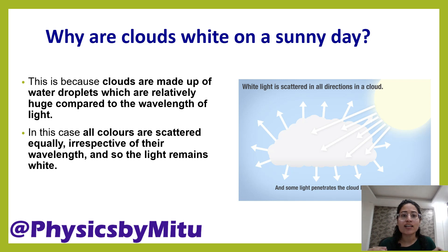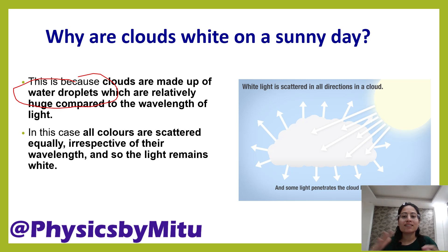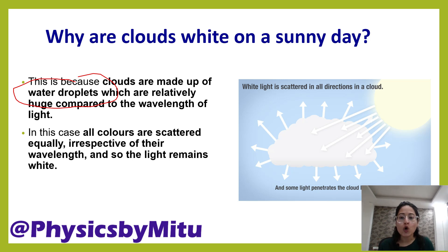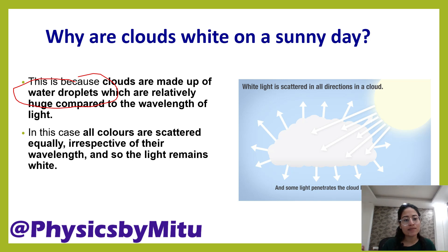Next question: why are clouds white on a sunny day? Clouds are made up of water droplets, and water droplets are huge in size. Because they are large particles, they scatter all wavelengths. All colors get scattered, and all colors mix together to form white color. Therefore, the light appears white.